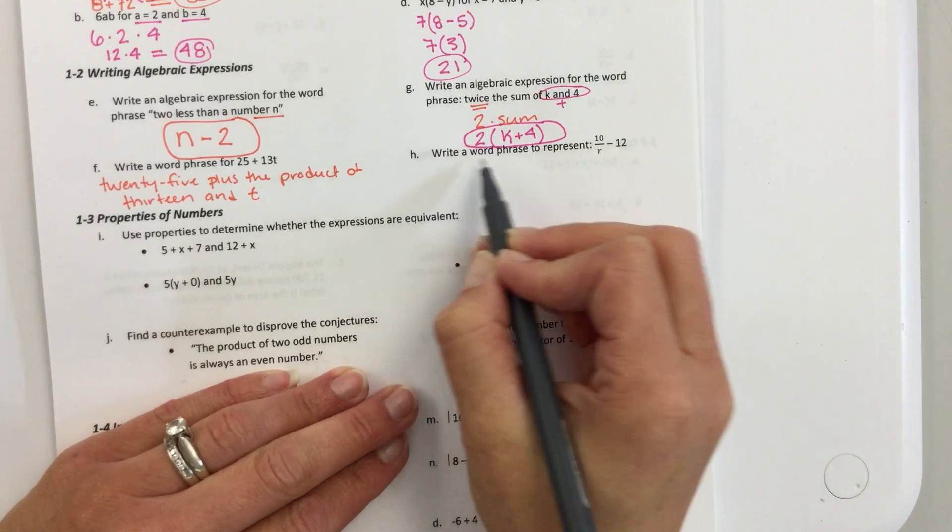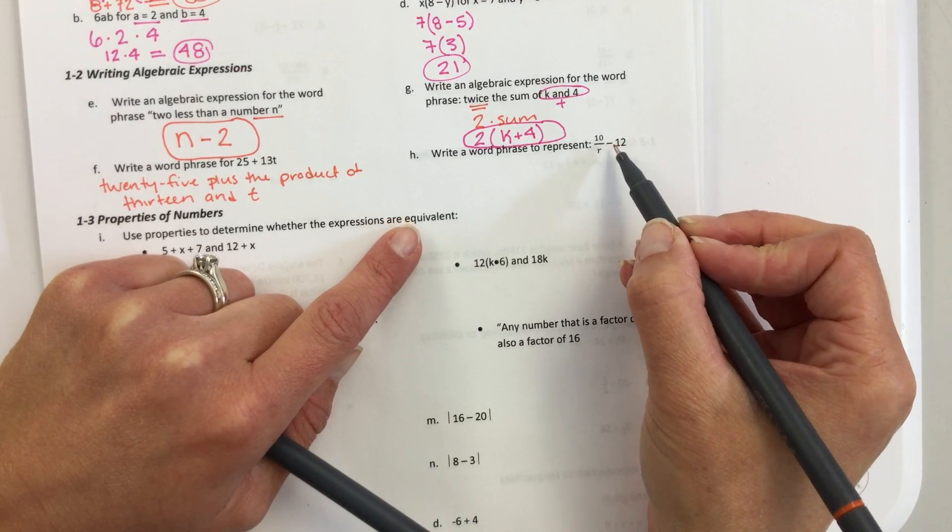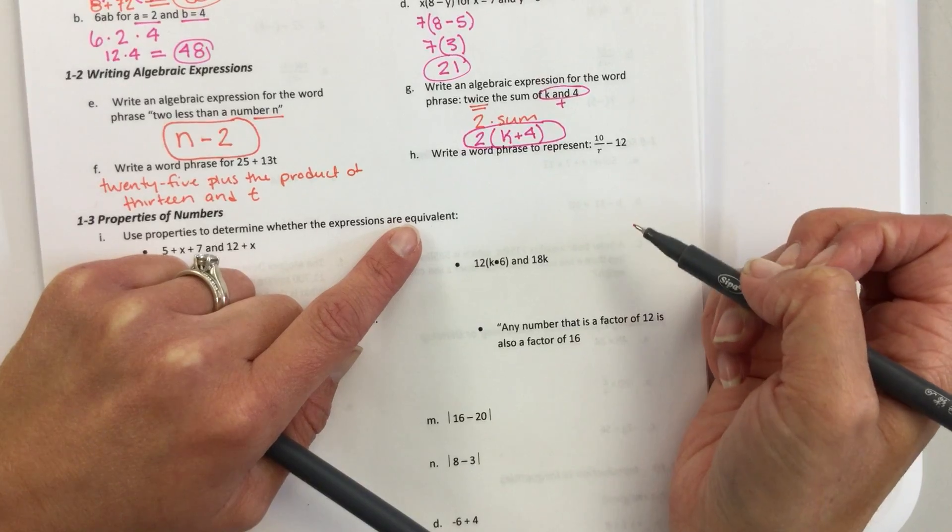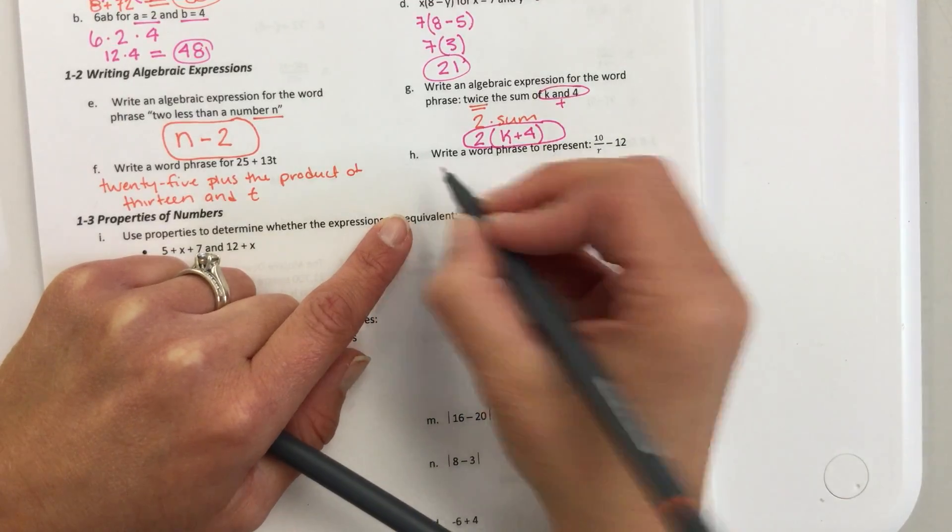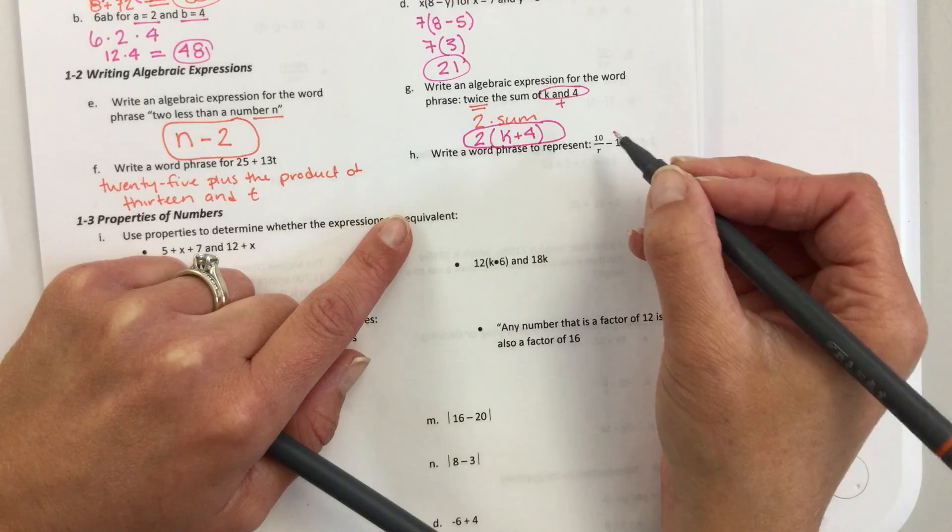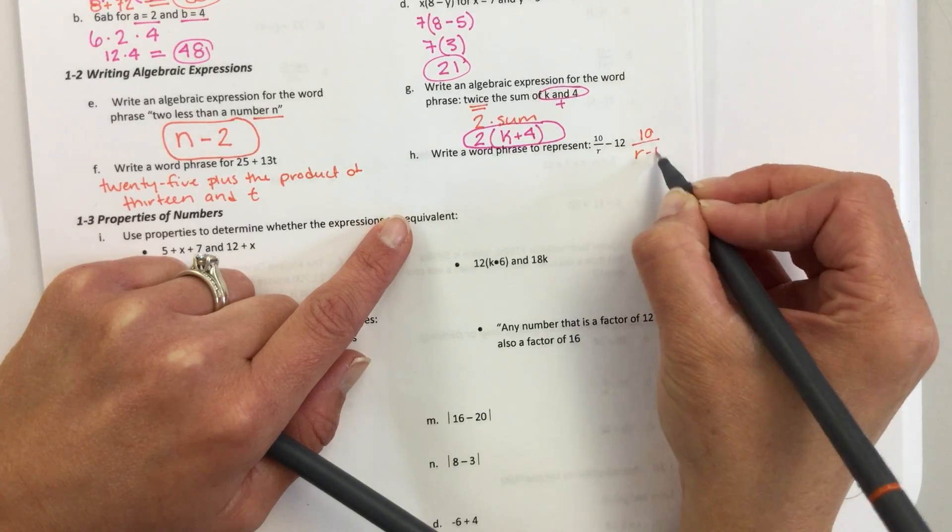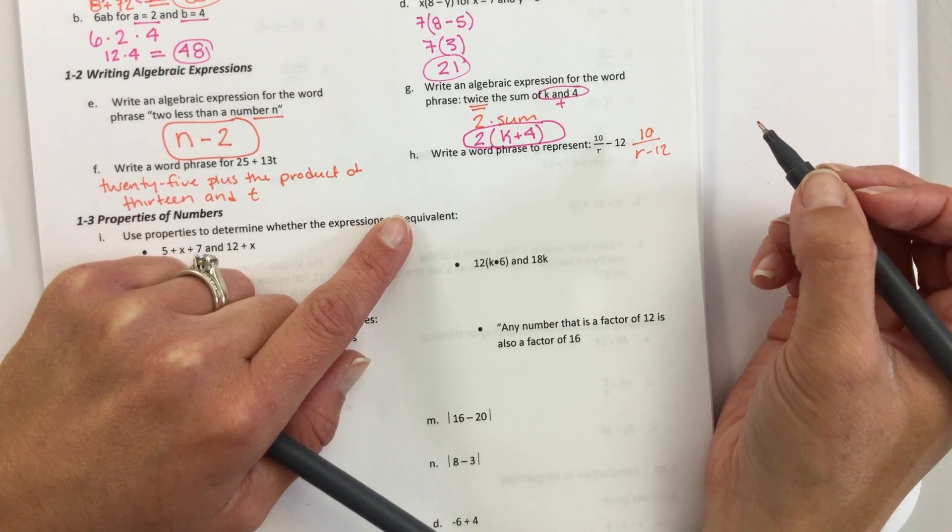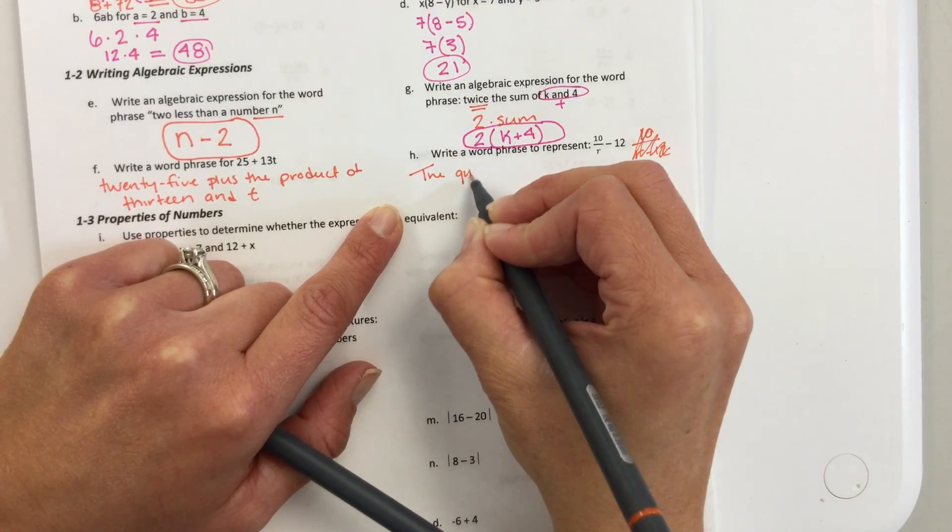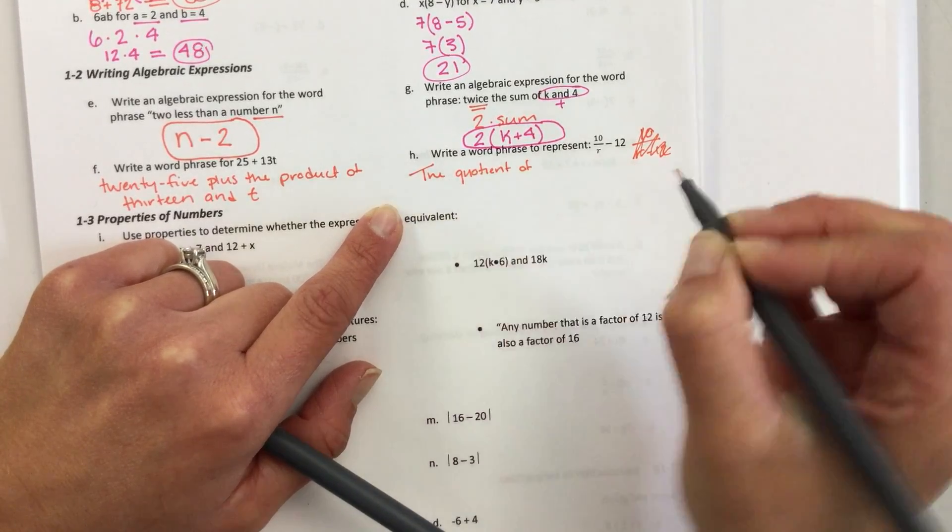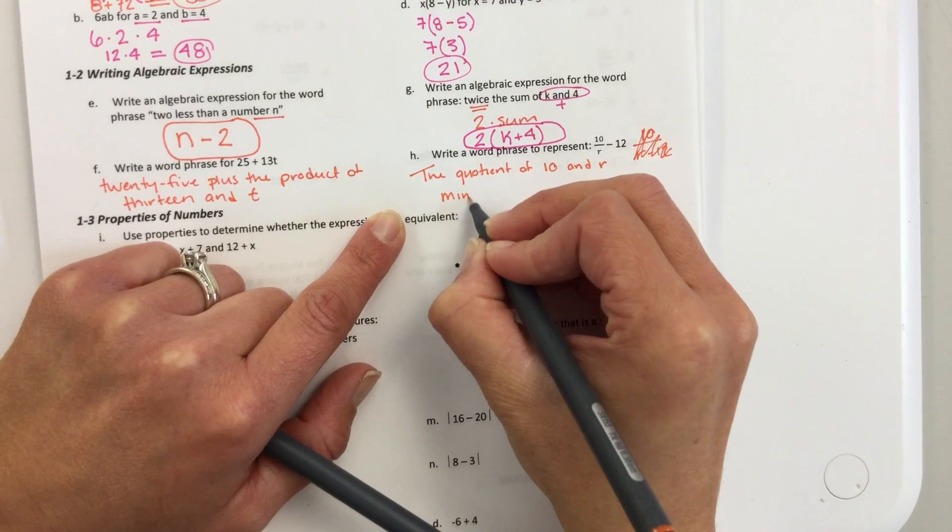Okay, so this one, there's a few different ways we could write this. We could say 12 less than the product, or the quotient of 10 in R. We could say the quotient of 10 in R minus 12. There's lots of different ways we could phrase it. You could say 10 divided by R. If you said 10 divided by R minus 12, you might think it looks like this. That's kind of what it sounds like, right?